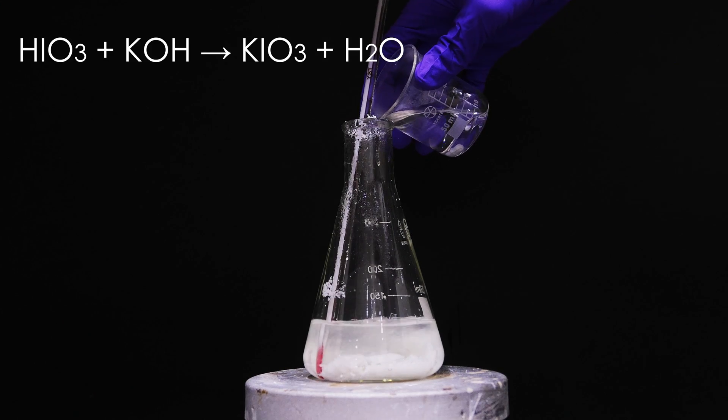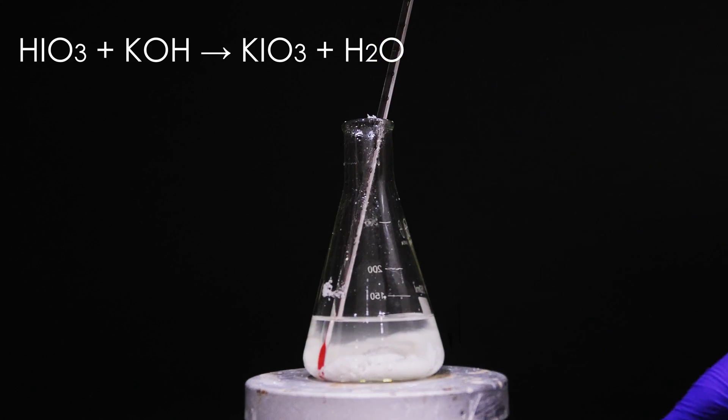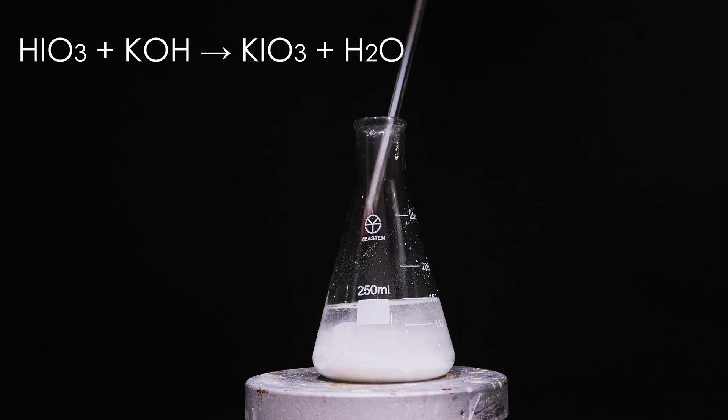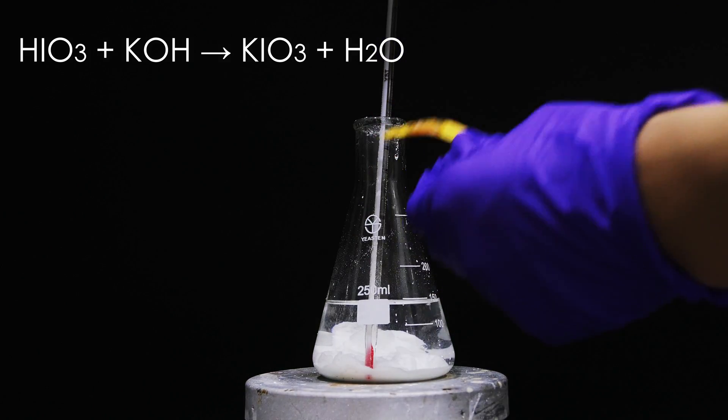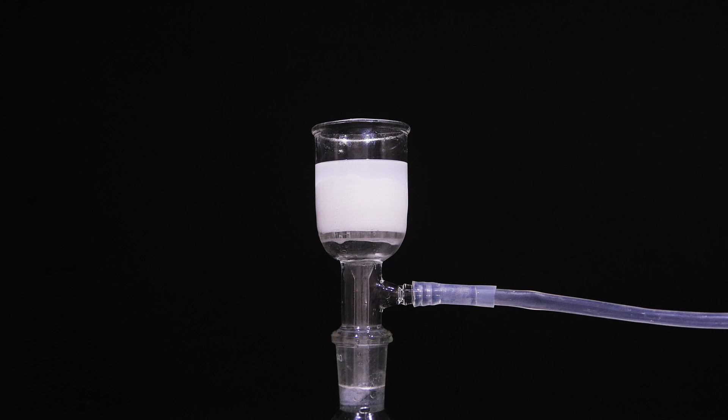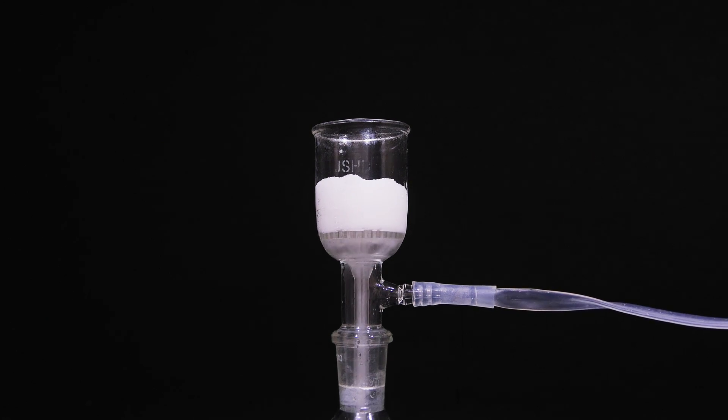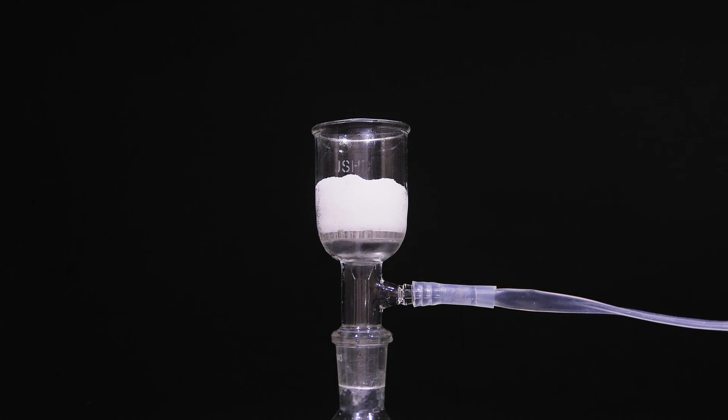Once all iodine disappears, adjust the pH to neutral by adding potassium hydroxide. Then the solution is allowed to cool to let potassium iodate crystallize out. After that, potassium iodate is filtered and thoroughly dried. Yield is 98% based on potassium chloride, or 43% based on iodine.